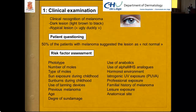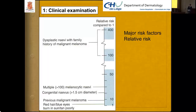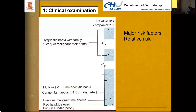Looking at the major risk factors for melanoma: previous melanoma increases the risk moderately, fair skin increases the risk only slowly. On the other end of the spectrum, patients with dysplastic nevus syndrome have a relative risk of melanoma increased 100 to 400 times.